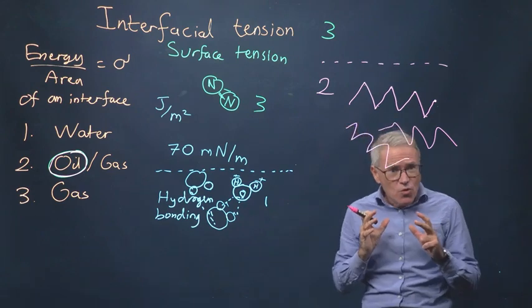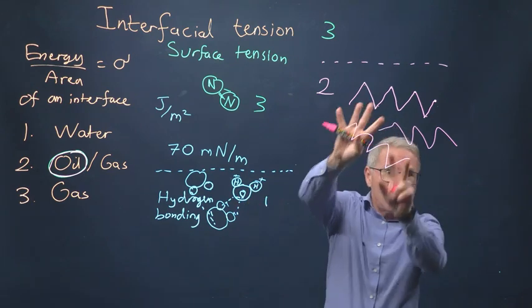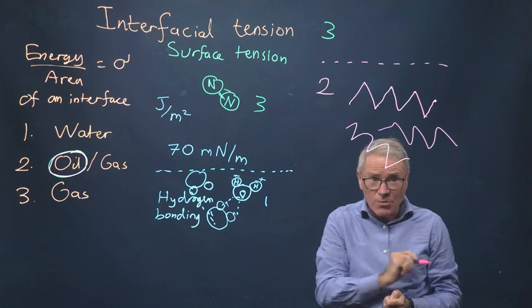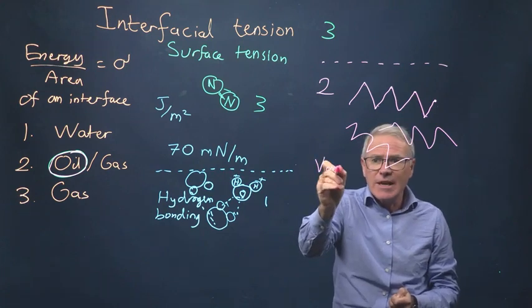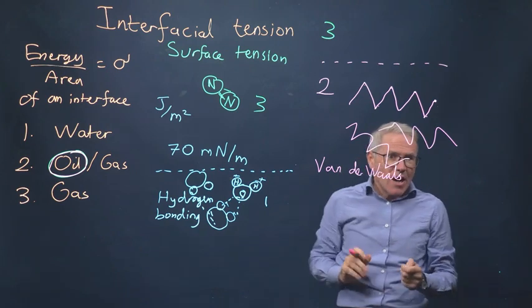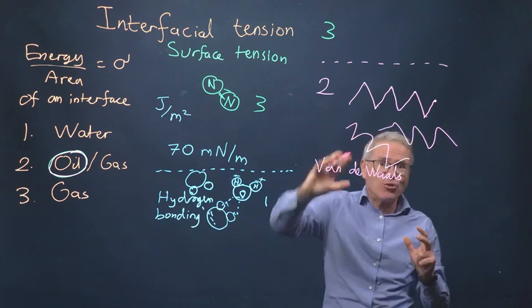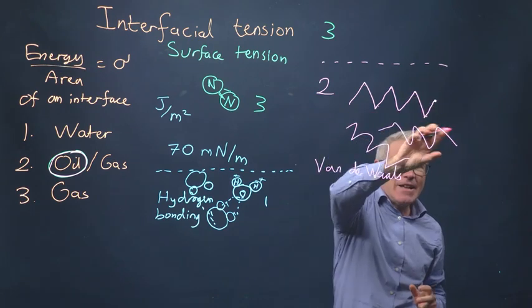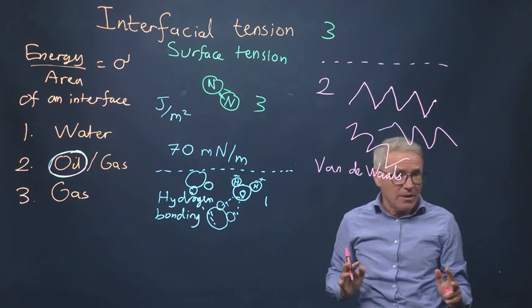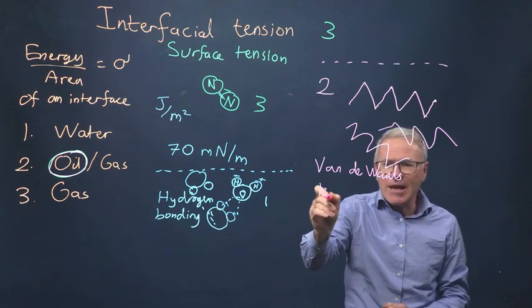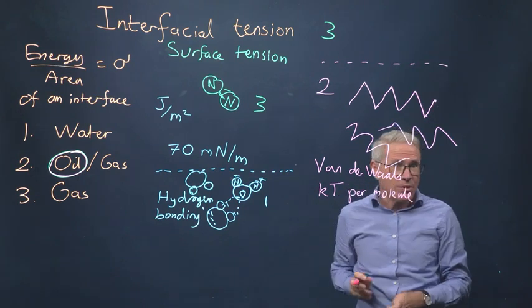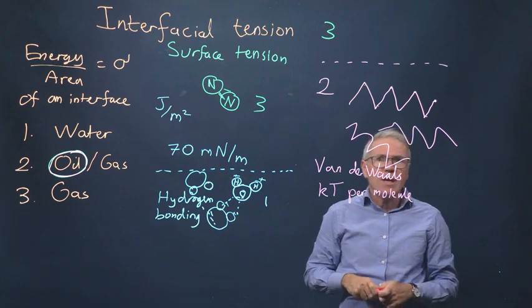Now, hydrocarbons do not have any dipole. There's not some sort of attraction between positive and negative, but you do still have intermolecular forces. What are those intermolecular forces? They're van der Waals. Van der Waals forces are due to fluctuations, essentially, in the electron cloud. So if there's an excess of electrons here, then there can be a deficit here, and there can be some fluctuating attraction between the molecules. And basically, it's about kT per molecule is the strength. k is the Boltzmann constant, T is the absolute temperature.